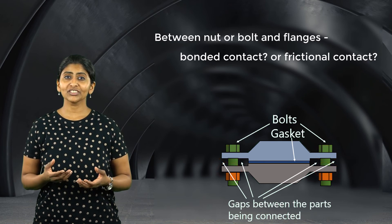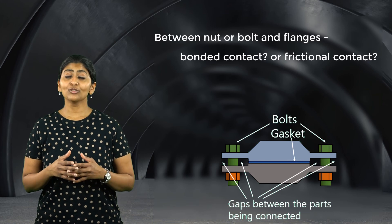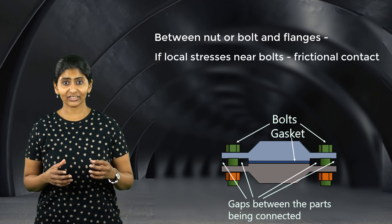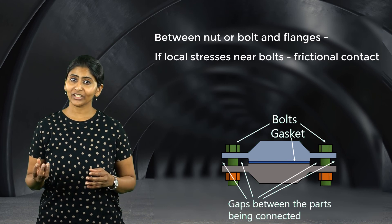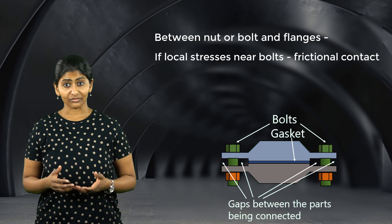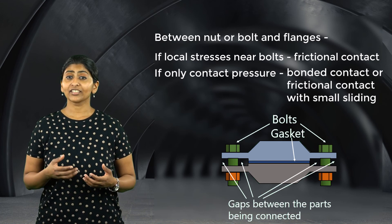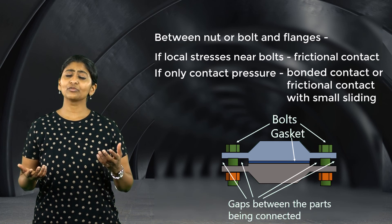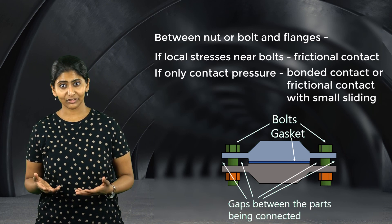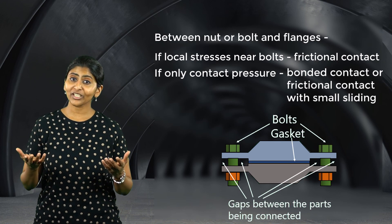To decide the type of contact, we look at the objective of the simulation. If we are interested in the local stresses around the bolts, then we may want to define frictional contact between the bolt head or nut and the mating components since some sliding might occur between them. However, if we are interested only in the contact pressure on the gasket, then modelling the contact as bonded contact or as frictional contact with small sliding may suffice. Thus, we also need to consider the objective of the simulation when choosing appropriate contact connections in order to balance our need for accuracy with computational efficiency.